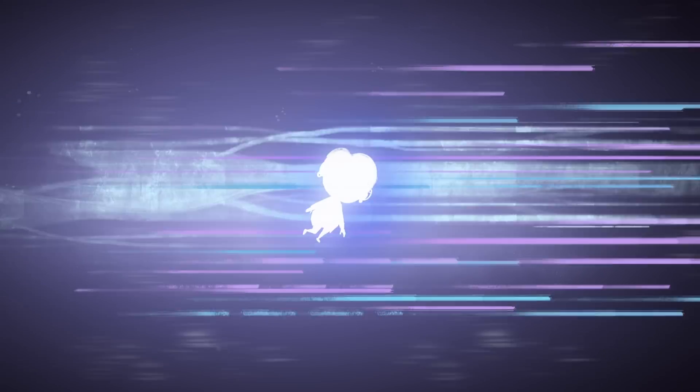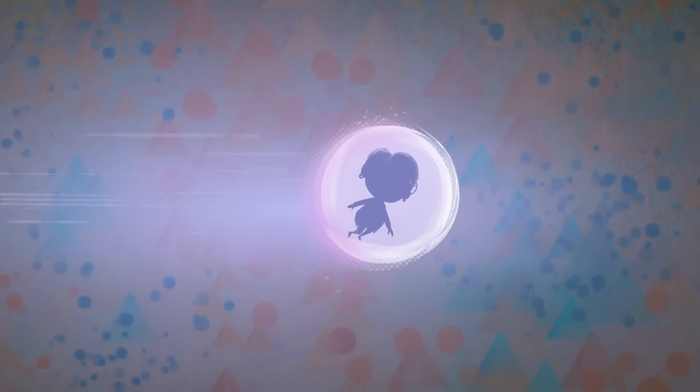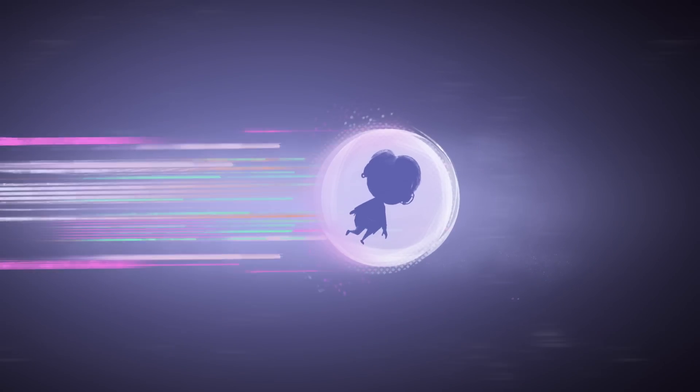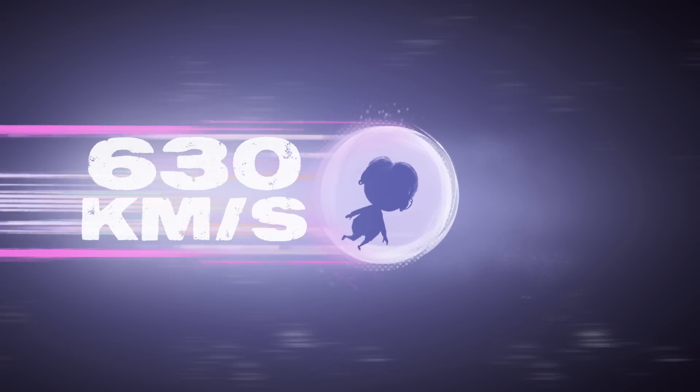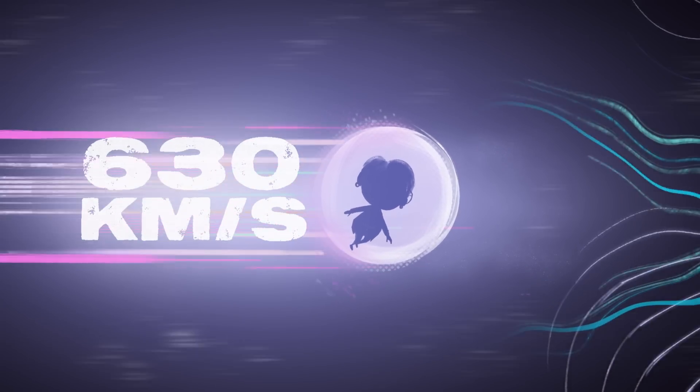By measuring the degree and direction of that shift, we can determine where we're going and how fast, relative to the CMB. And the answer is 630 kilometers per second towards the Great Attractor.